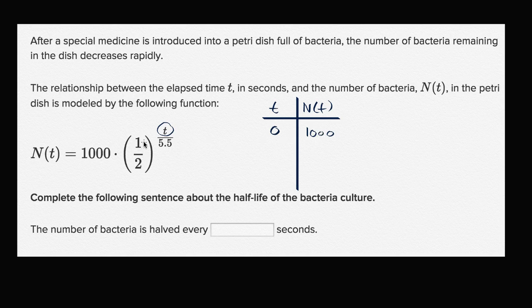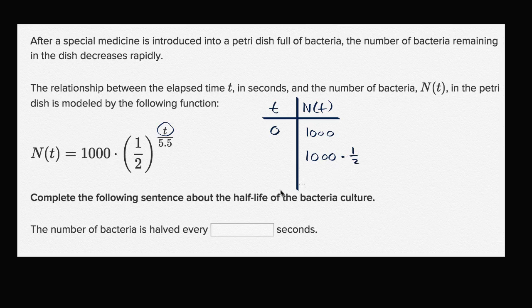Now, at what point do we get to multiply by one-half? At what point do we get to say 1,000 times one-half? Well, in order to say 1,000 times one-half, the exponent here has to be one.